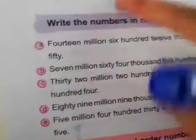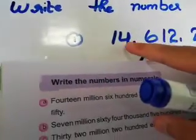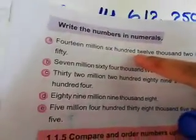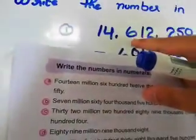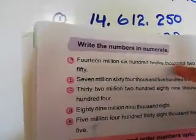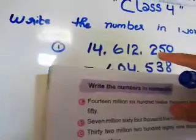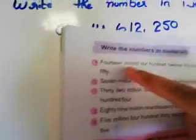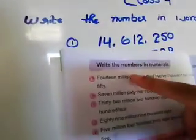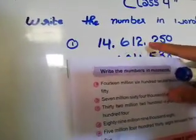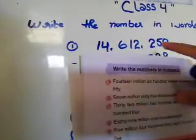Pehla number hai: fourteen million six hundred twelve thousand two hundred and fifty. Yeh dekhe — fourteen million, six hundred twelve thousand, two hundred and fifty.